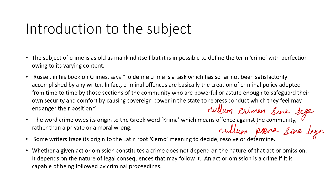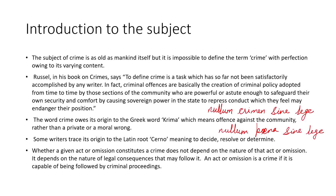The word crime owes its origin to the Greek word krema, which means offense against the community rather than a private or a moral wrong. So a crime is the offense against the public at large. Some writers trace the origin of this term to the Latin root cerno, which means to decide, to resolve or to determine. Whether a given act or omission constitutes a crime does not depend on the nature of that act or omission — it depends on the nature of legal consequences that may follow it. An act or omission is a crime if it is capable of being followed by criminal proceedings.